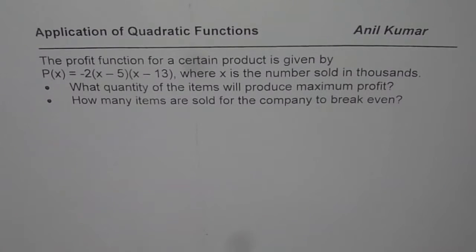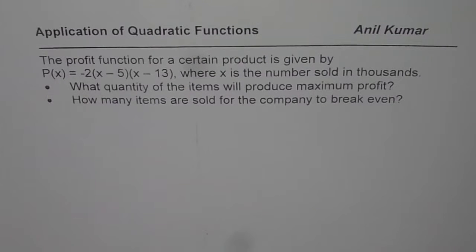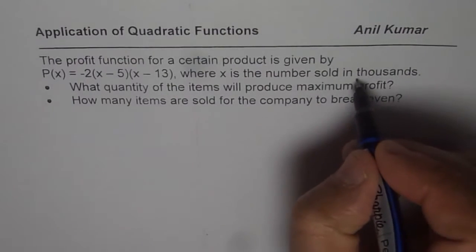I am Anil Kumar and we are reviewing quadratic functions. The profit function for a certain product is given by P(x) = -2(x - 5)(x - 13), where x is number sold in thousands.